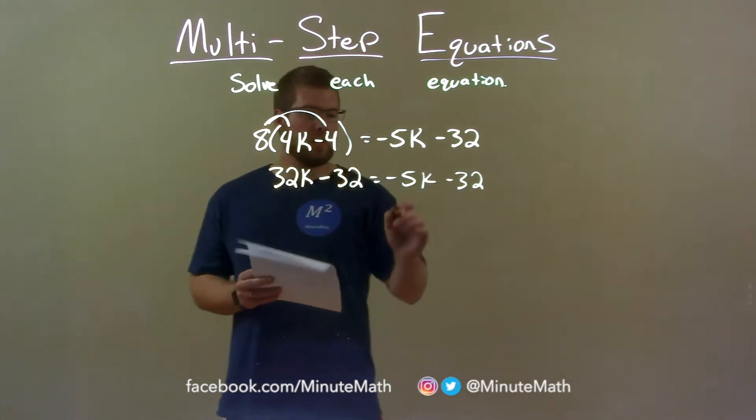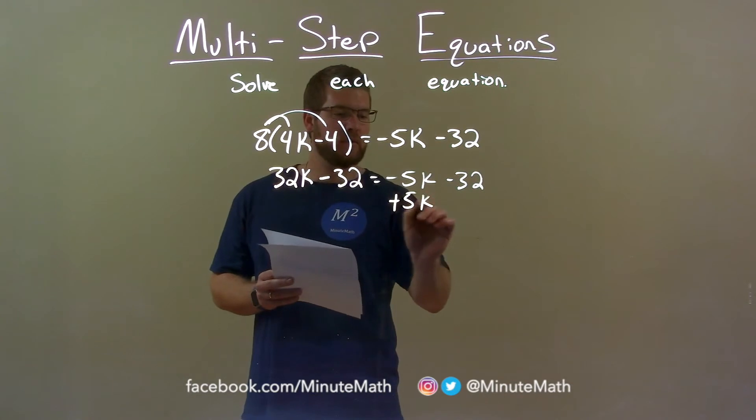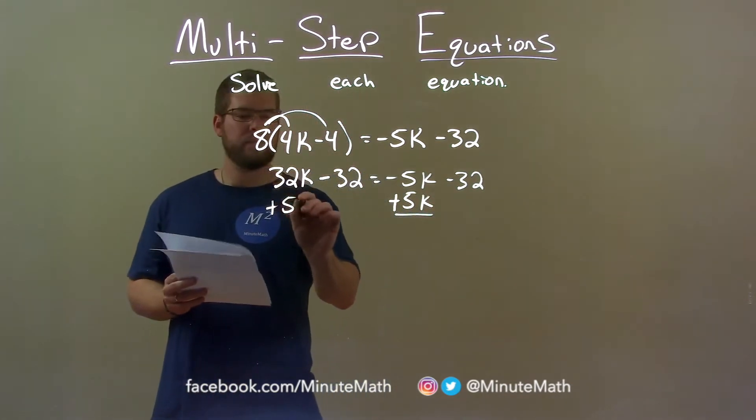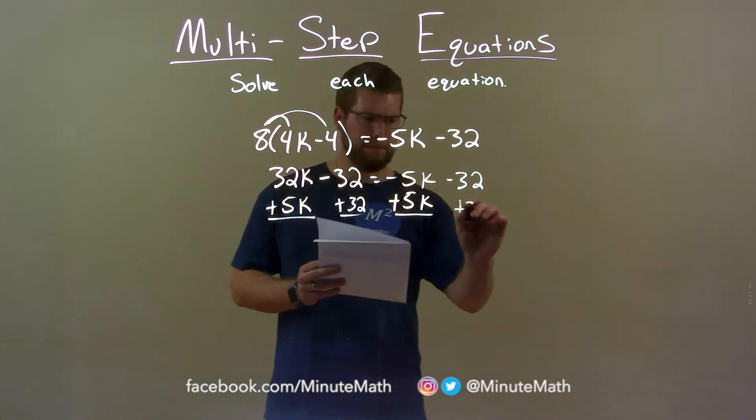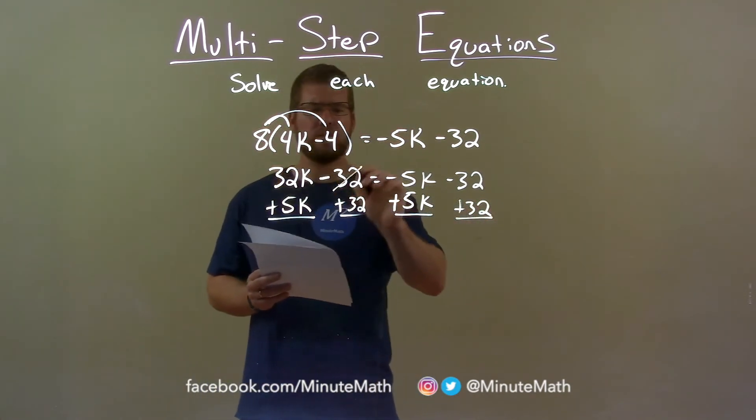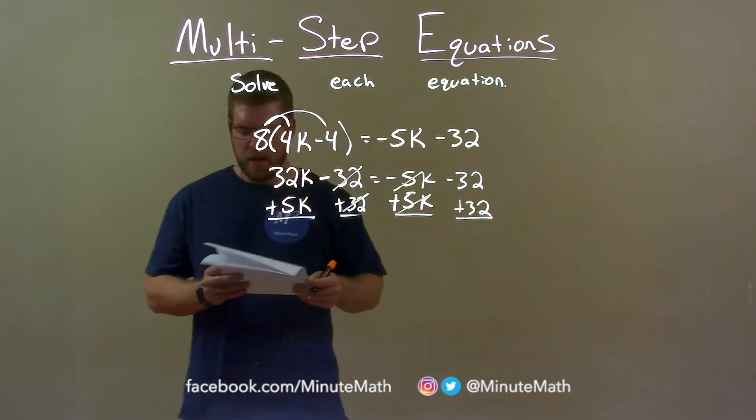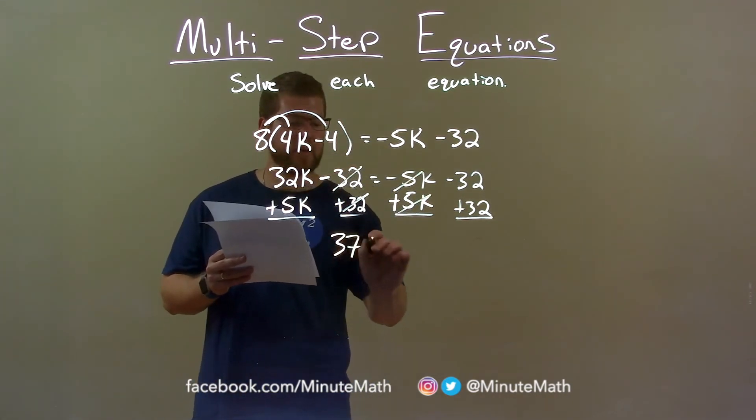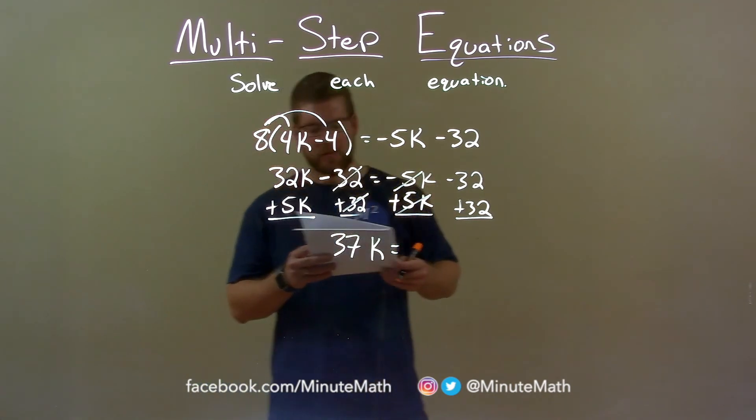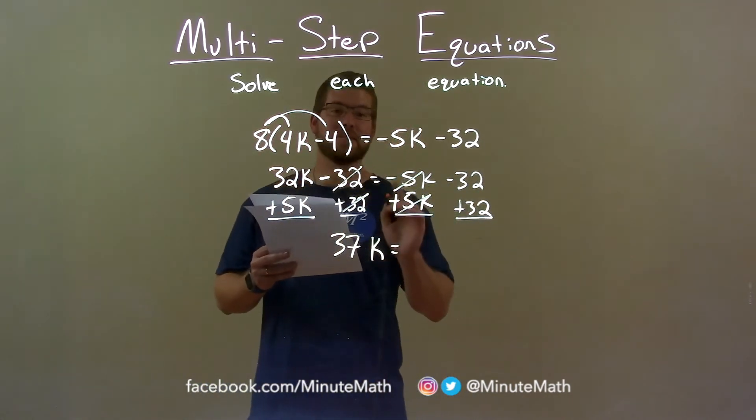Let's combine our like terms, so I'm going to add 5k to both sides and add 32 to both sides. The 32s cancel on the left, 5ks cancel on the right. And I'm left with 32k plus 5k is 37k. Negative 32 plus positive 32 is 0.